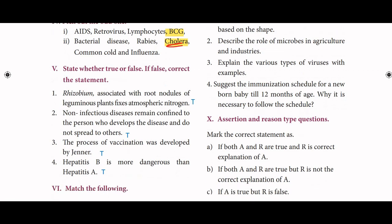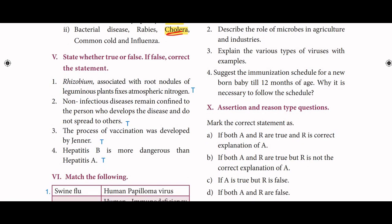State whether true or false; if false, correct the statement. Rhizobium associated with root nodules of leguminous plants fixes atmospheric nitrogen — True. Non-infectious diseases remain confined to the person who develops the disease and do not spread to others — True. The process of vaccination was developed by Jenner — True. Hepatitis B is more dangerous than Hepatitis A — True.